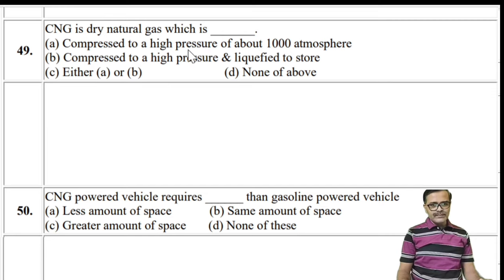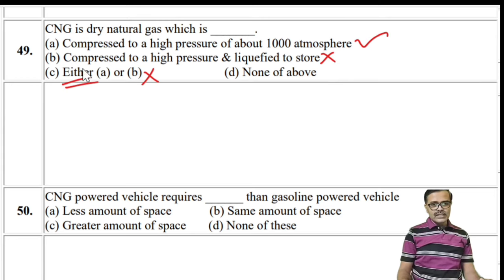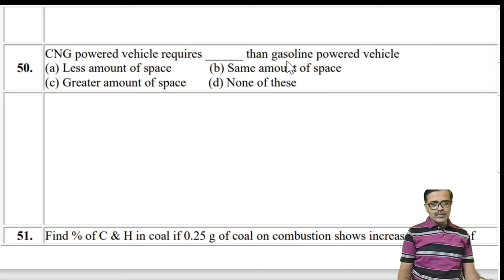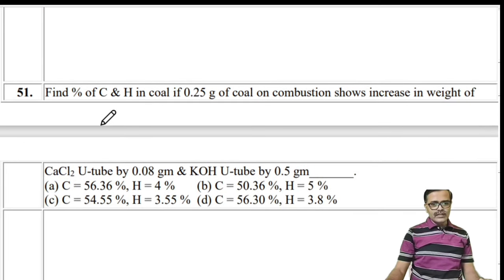CNG is dry natural gas compressed to high pressure (about 1000 atmospheres) — it is not liquefied. So option A is the correct definition. CNG-powered vehicles require a greater amount of storage space than gasoline-powered vehicles.